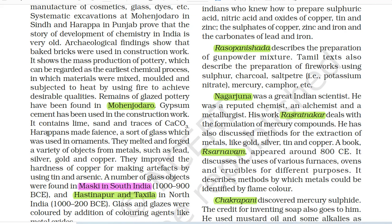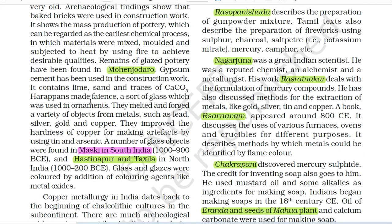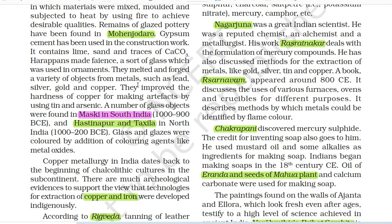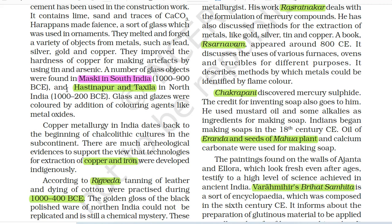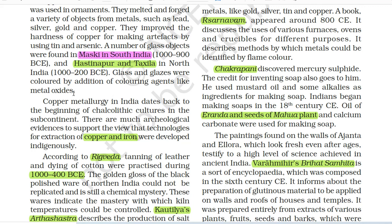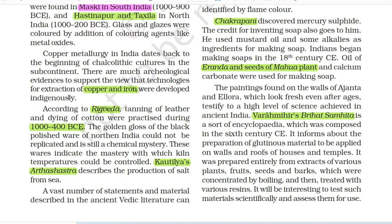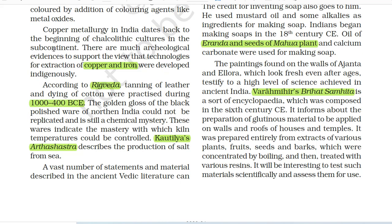Gypsum cement has been used in the construction work. It contains lime, sand and traces of CaCO3, i.e. calcium carbonate. Harappans made faience, a sort of glass which was used in ornaments. They melted and forged a variety of objects from metals such as lead, silver, gold and copper. They improved the hardness of copper for making artifacts by using tin and arsenic. A number of glass objects were found in Muski in South India (1000–900 BCE) and Hastinapur and Takshila in North India (1000–200 BCE). Glass and glazes were colored by addition of coloring agents like metal oxides.